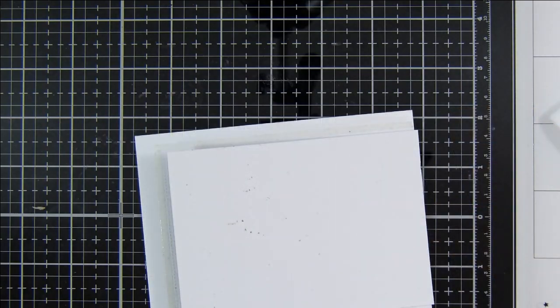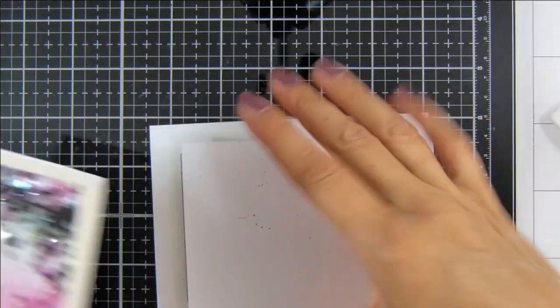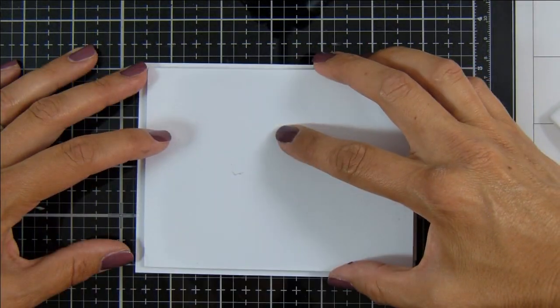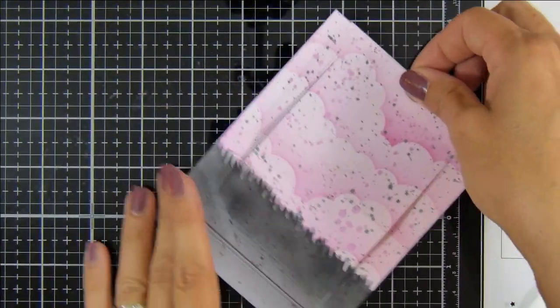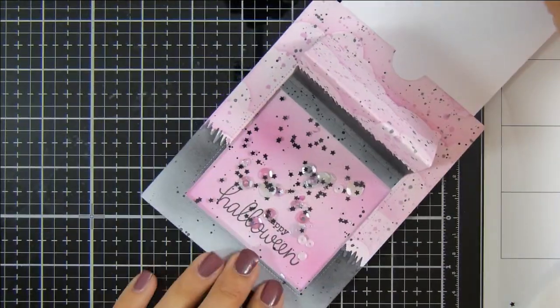Just pull off that masking tape, and now I can adhere my shaker panel to my sliding window panel. And voila, our card is starting to come together and look really cool.